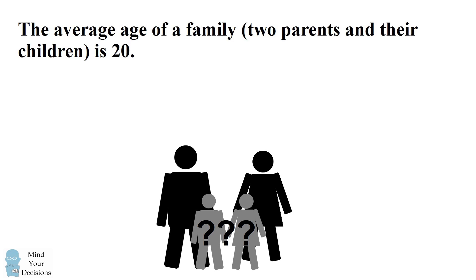Hey, this is Presh Talwalkar. The average age of a family, consisting of two parents and their children, is 20.